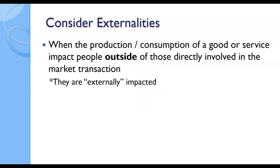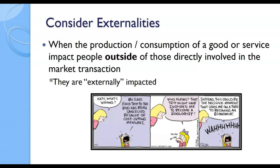Moving on to externalities. Externalities occur when the production or consumption of a good or service impacts people outside of those directly involved in the market transactions — they are externally impacted. For example, in a comic strip, Katie's class field trip to the zoo was canceled because of cost-cutting measures. Katie was not part of that board meeting; she was in no way part of that conversation, and yet she is externally being impacted. Who knows — that trip might have inspired her to become a zoologist. Instead, this could be the decisive moment that leads her on the path to becoming an economist.